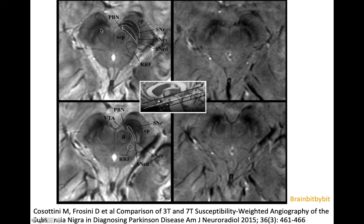On the 7 tesla images you can see that the substantia nigra consists of two different parts. On the anterior and inferior side is the pars reticulata with inhibitory GABAergic neurons. Behind that is the pars compacta, located dorsal and superior, with the dopaminergic neurons that are lost in Parkinson's disease. The dopaminergic neurons are slightly hyperintense on T2-weighted images.